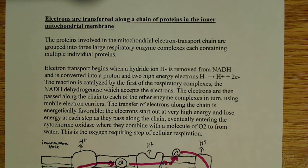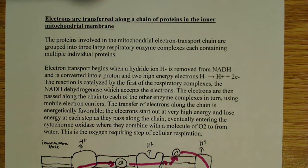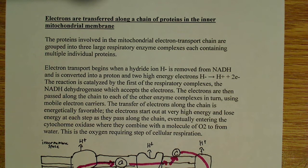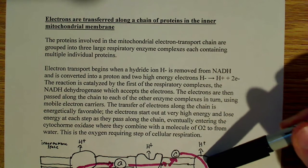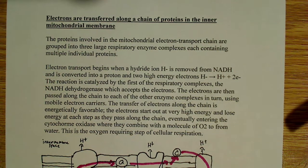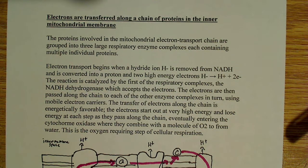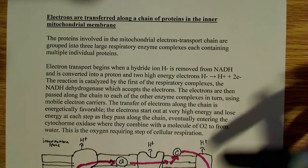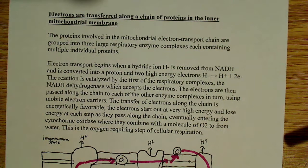The transfer of electrons along this chain is energetically favorable. The electrons start out with very high energy, and as they move from one complex to the next, they lose a little bit of energy at each step. As they pass along the chain, they eventually enter cytochrome oxidase — the final complex — where they combine with a molecule of oxygen to form water. Those electrons are finally donated to a molecule of oxygen to create water.